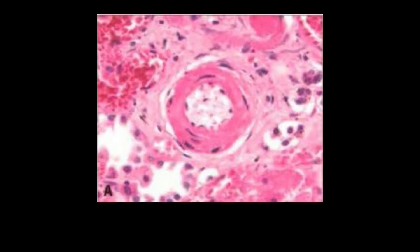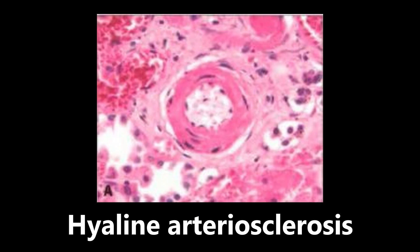Back to histology — we have what looks like a vessel with a lot of pink going on. What we're looking at is hyaline arteriosclerosis. There's sclerosis of the vessel with a lot of buildup of tissue causing thickening and hardening of that vessel. This is a really important histology slide to know — a cross-section showing hyaline arteriosclerosis.